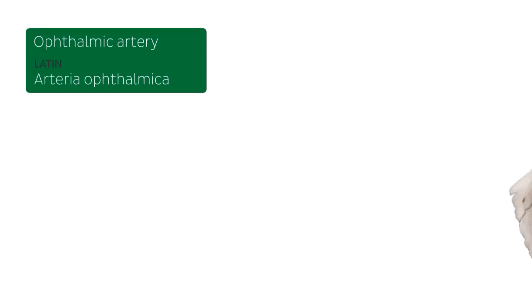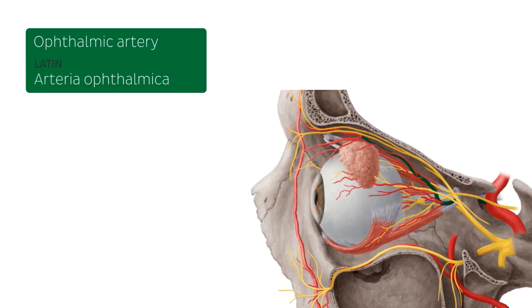The ophthalmic artery will be splitting into numerous branches that we're going to be covering here on this tutorial. There are two main images we see throughout this tutorial. The first is the superior view I already mentioned, but we also saw a lateral view of the orbit where we can expose these structures. You also see other structures here like some nerves that are closely nearby the arteries that we're going to talk about.